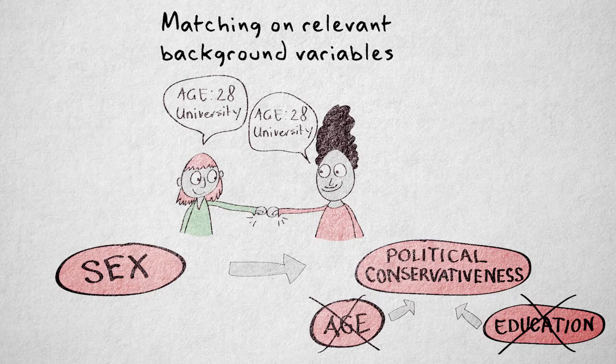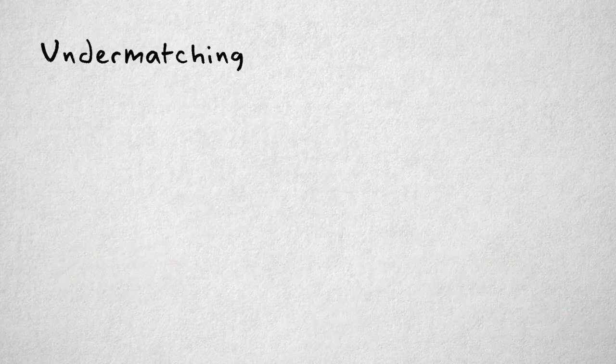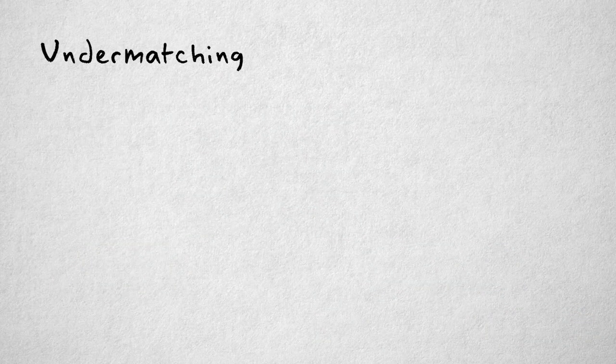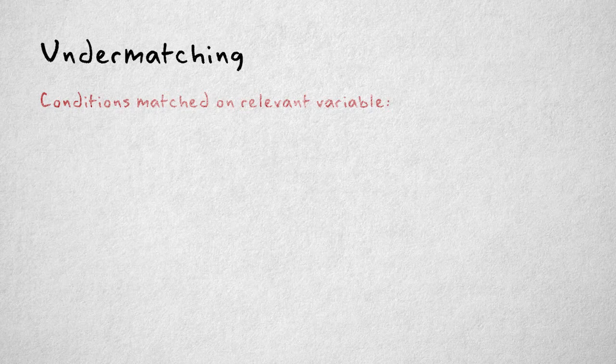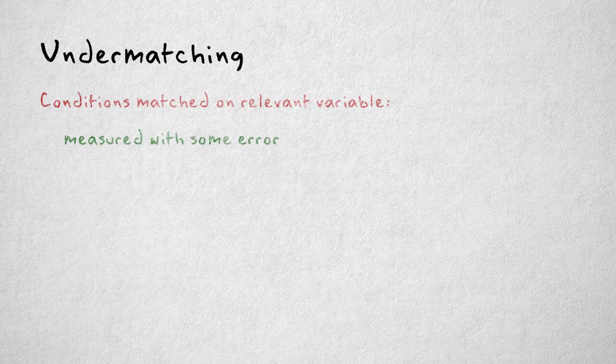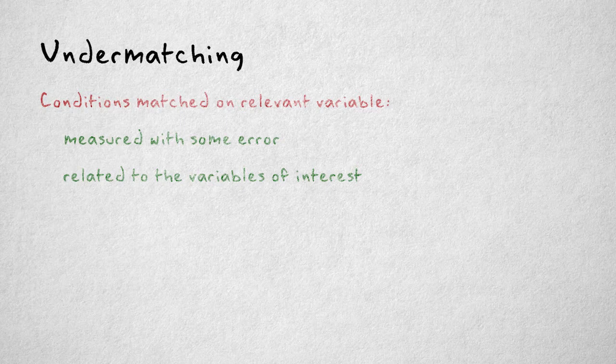There is a potential danger in the use of matching, though. A thing called undermatching could occur. This can happen when the conditions are matched on a variable that is measured with some degree of error and is related to the variables of interest. To understand what this means and how undermatching can occur, you first need to understand what regression to the mean is.